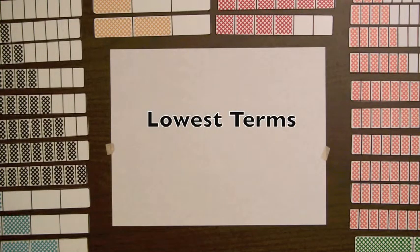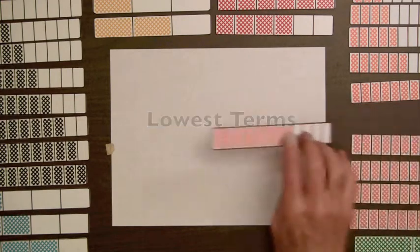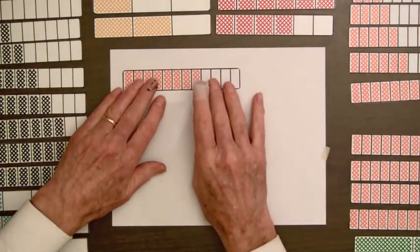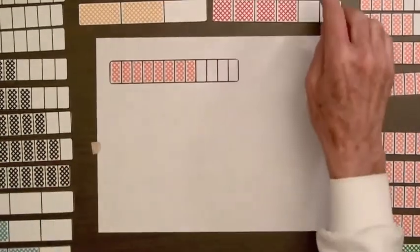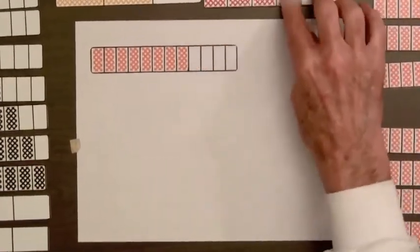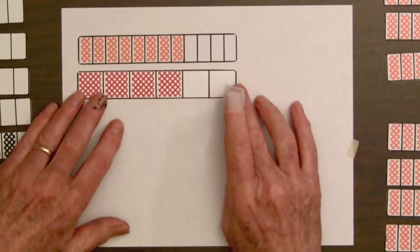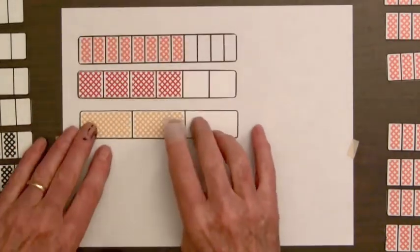Let's look at three bars that all have the same shaded amount. We'll go for eight parts out of twelve, four parts out of six, two parts out of three.